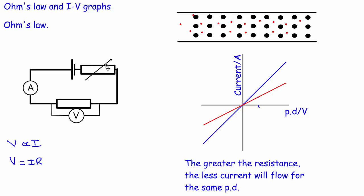We alter the resistance of the circuit by changing the resistance of the variable resistor, which changes the potential difference across the component and the current. Running it in one direction where the ammeter and voltmeter both read positive numbers gives us a line on one side. To get the other side we simply swap the battery around so current and potential difference are both reading negative numbers, giving the same thing mirrored — the two sides are symmetric. Swapping the resistor for a different one potentially gives a different gradient line.